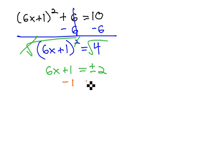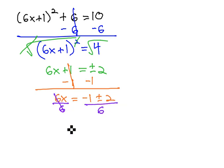Now we can start isolating x by subtracting the 1, giving us 6x equals negative 1 plus or minus 2, and finally dividing both sides by 6 gives us x equals negative 1 plus or minus 2 over 6.